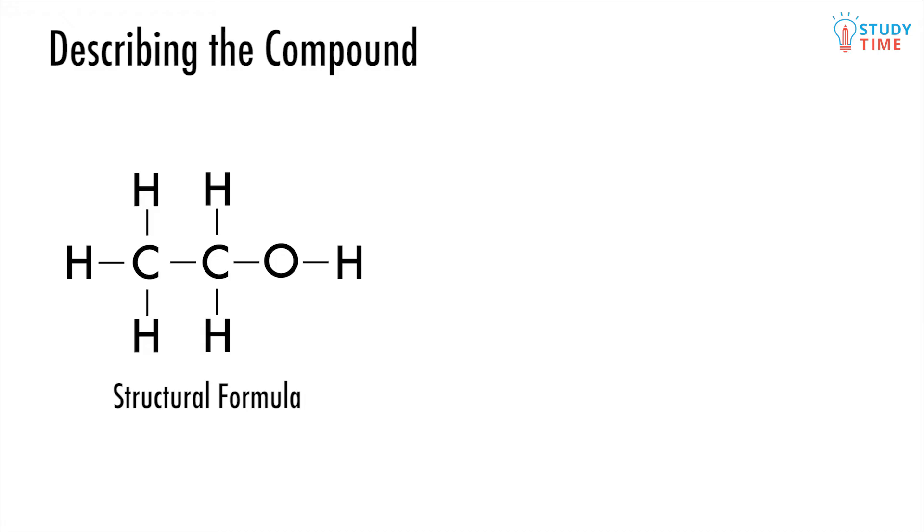These diagrams very clearly show the structure of the molecule, but they can get quite big and complicated, so for simplicity a molecular formula can be used instead. This shows the number of each type of atom in the molecule. For ethanol, it would look like this.